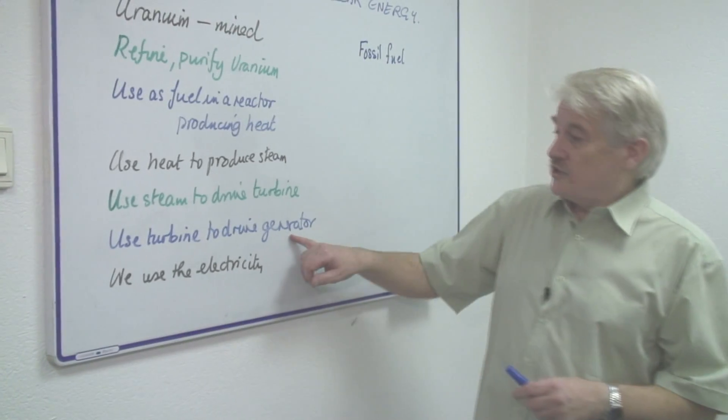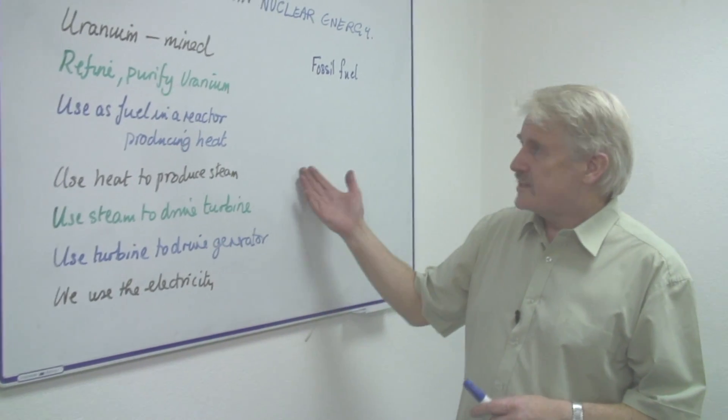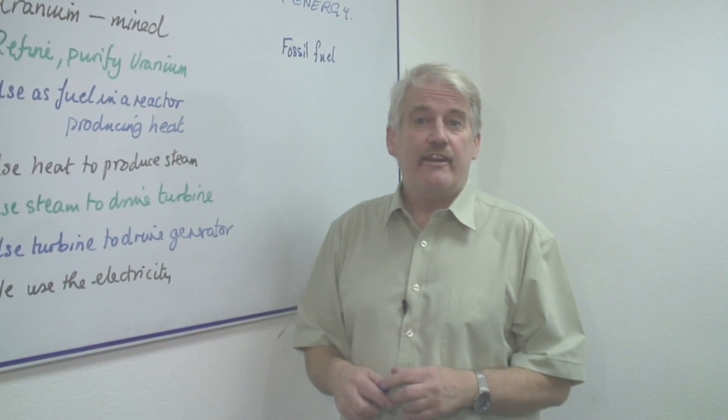So the generator then produces the electricity which we can use in our homes. So that is how we obtain nuclear energy.